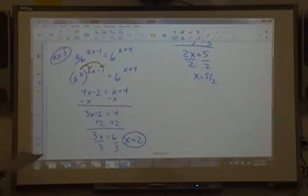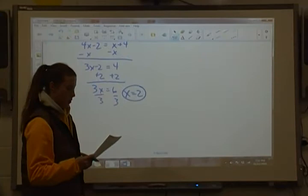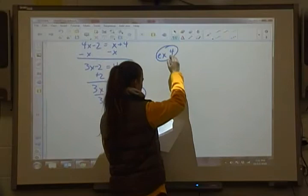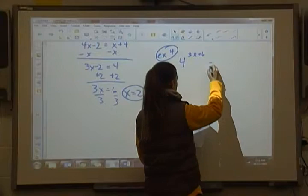All right, let's look at a couple more. So let's take a look at one like, let's see, for example, let's go with 4. How about 4 to the 3x plus 6 is equal to 1 over 16.